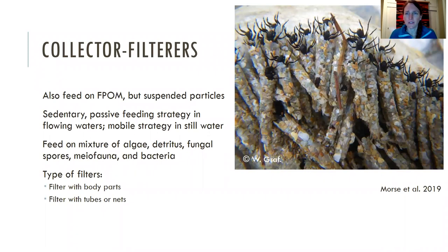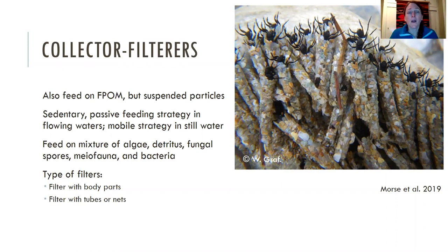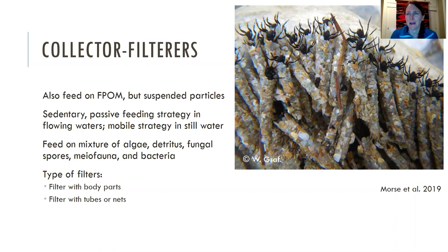These are typical collector filterers. You can see caddisflies with their arms kind of waving out — they're feeding mainly on FPOM and suspended particles in the water column. Most collector filterers have a sedentary or passive feeding strategy in flowing waters: they sit stuck to the surface and let stuff float past and catch it. In still water, they'll have a mobile strategy, swimming around to get things caught in their hairy appendages. Collector filterers feed on a mixture of algae, detritus, fungal spores, feces, meiofauna — like gastrotrichs, rotifers, and paramecia — and bacteria.